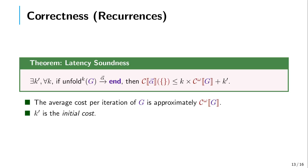For latencies of recursive protocols, we prove that the latency — this cost omega — is indeed an approximation of the average cost per iteration of the global type. That is, if we have a trace and divide the cost of the trace by the number of iterations the protocol took, then we will get approximately cost omega.